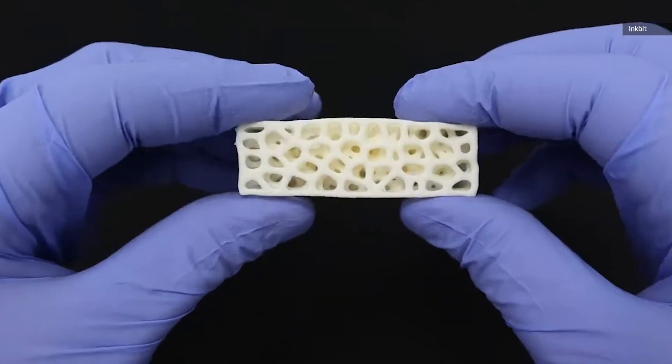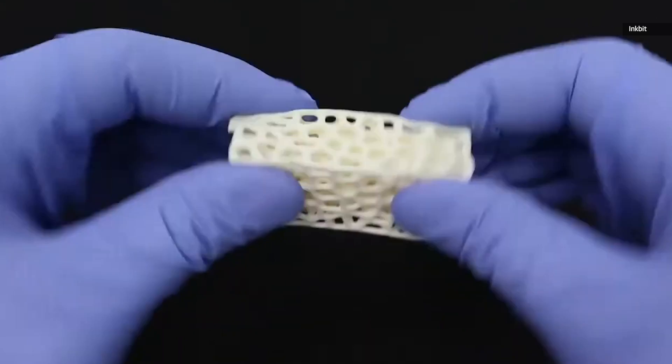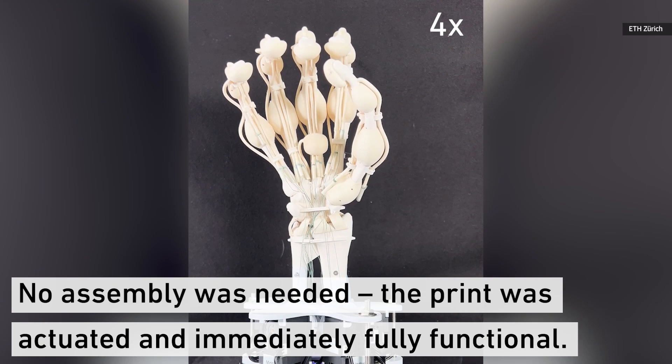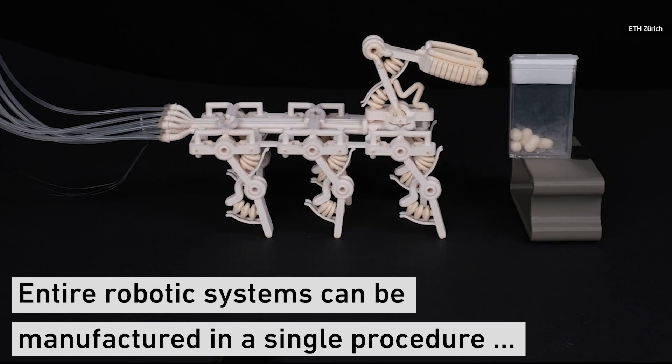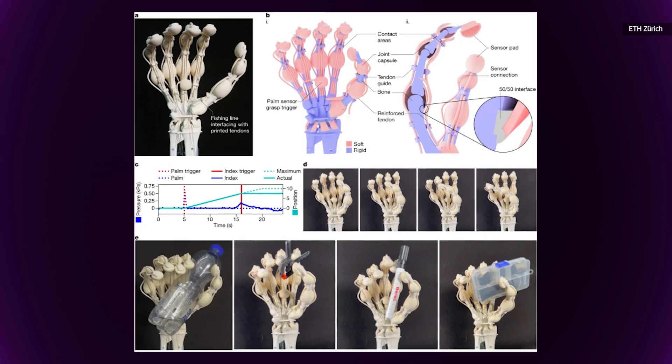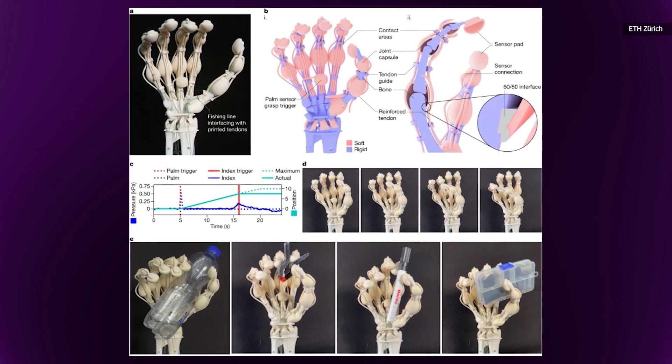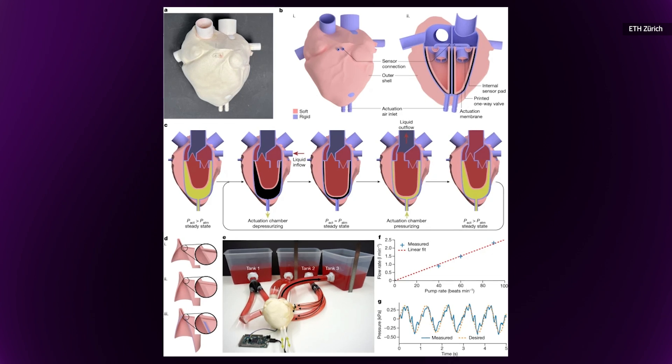Inkbit plans to sell its new 3D printing technology both as a service and as the physical printers themselves, while ETH Zurich will continue to develop the tech for use in even more sophisticated structures and applications.